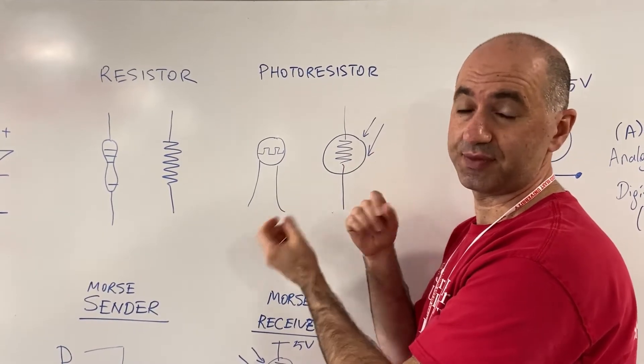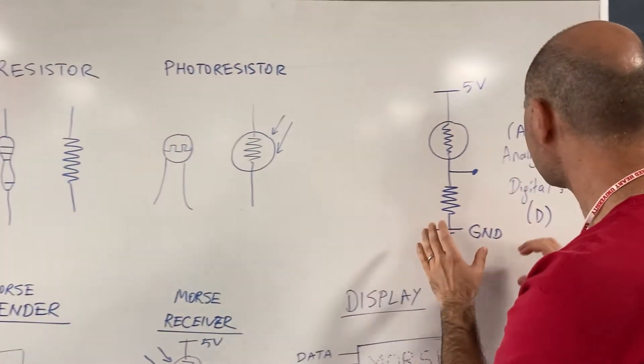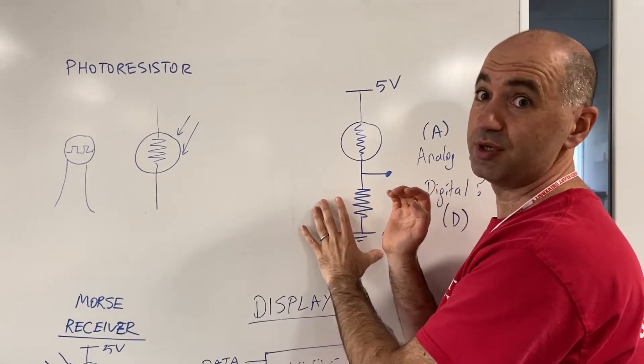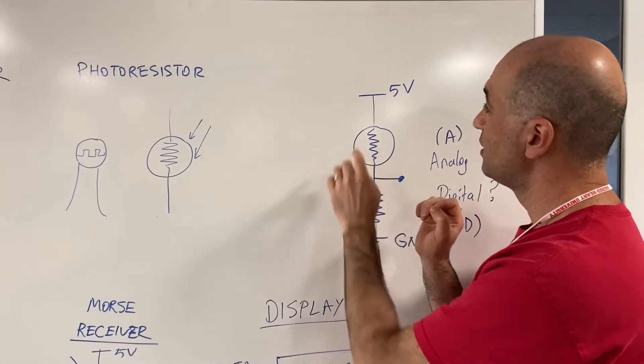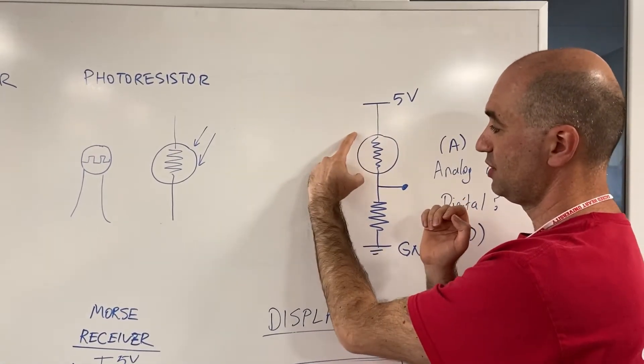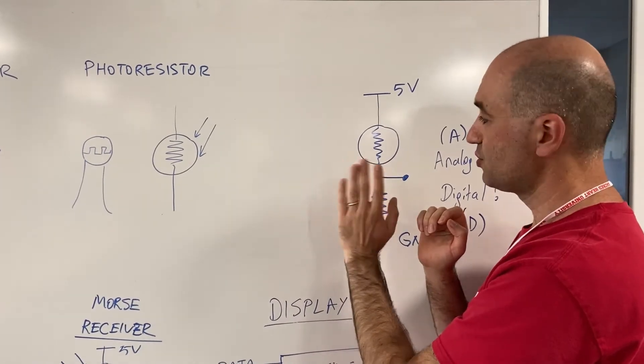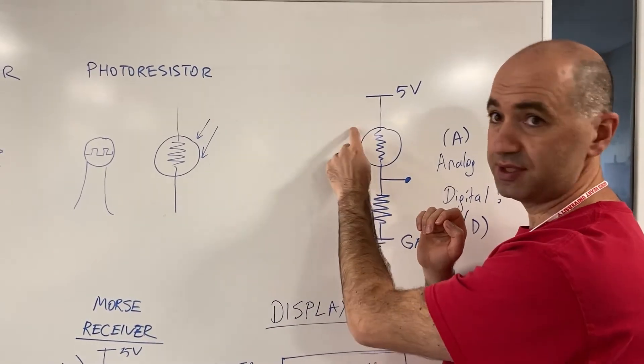Let's look at this circuit. This is actually very simple - this is your morse code receiver. We apply five volts, there is one photoresistor and there is a resistor. Think about this: there are two resistors here.